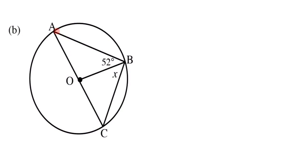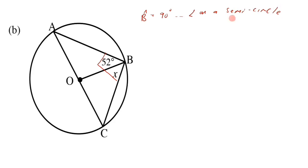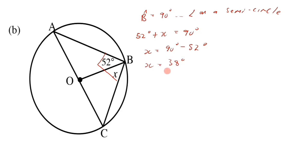For exercise B, AOC is a diameter. From Theorem 3, the diameter subtends an angle of 90 degrees on the circumference, so angle B equals 90 degrees — reason: 'angle on a semicircle'. Breaking down angle B, we have 52 degrees plus x equals 90 degrees. Therefore x equals 90 minus 52, giving us x equals 38 degrees.